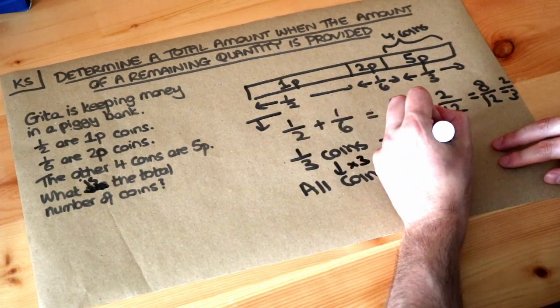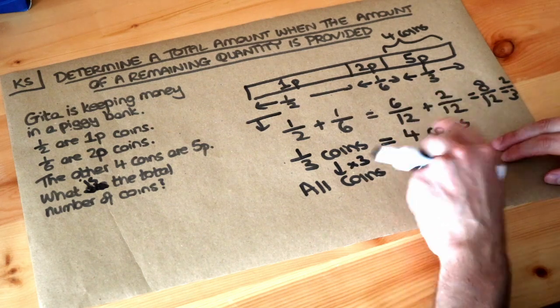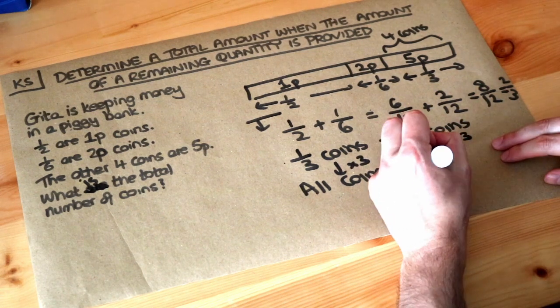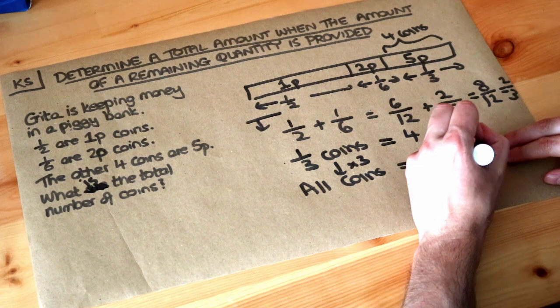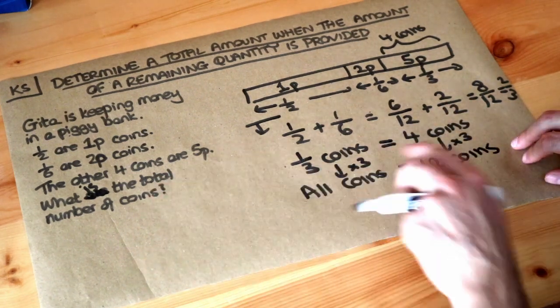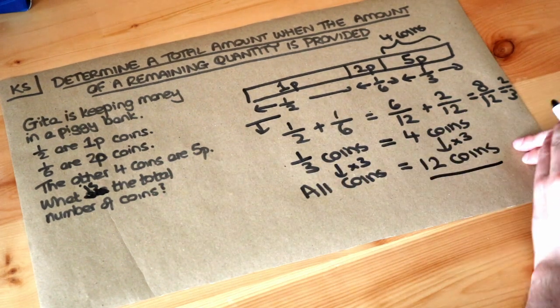And therefore all of the coins, well all of the coins is three times bigger than a third of the coins. We saw that in a previous video, so we therefore just need to times by 3. 4 times 3 is equal to 12 coins, so therefore the total number of coins, all the coins, is 12 coins in total.